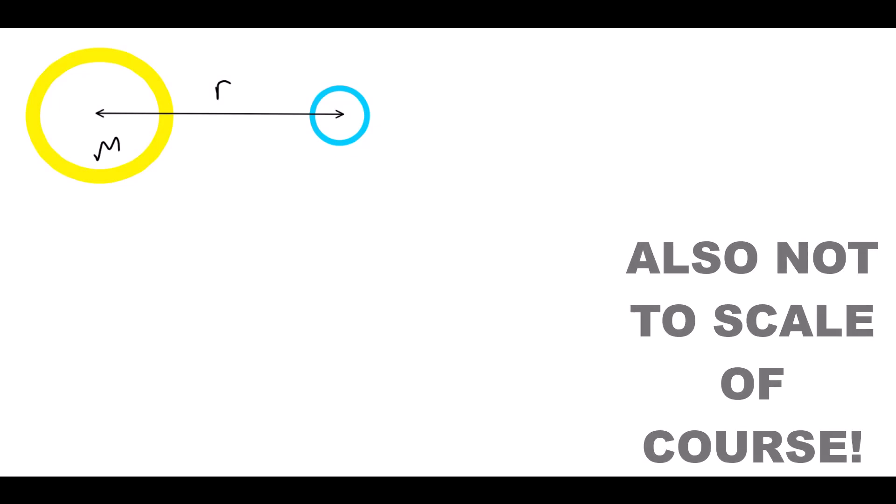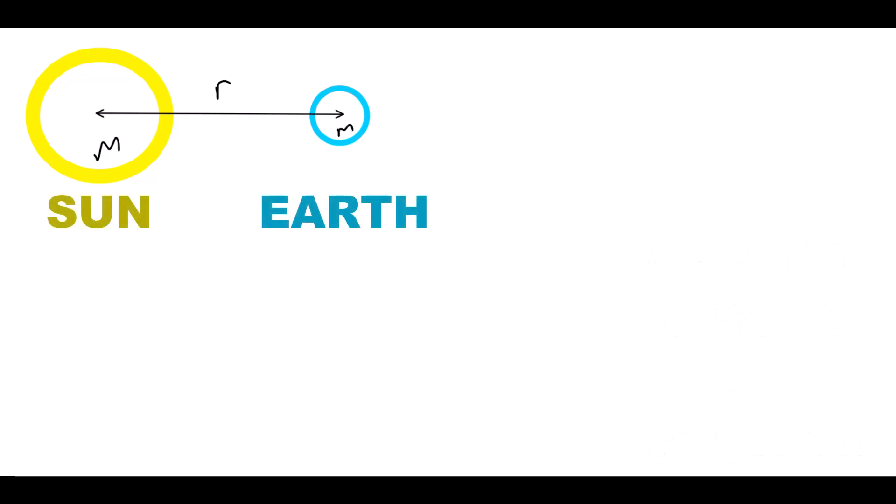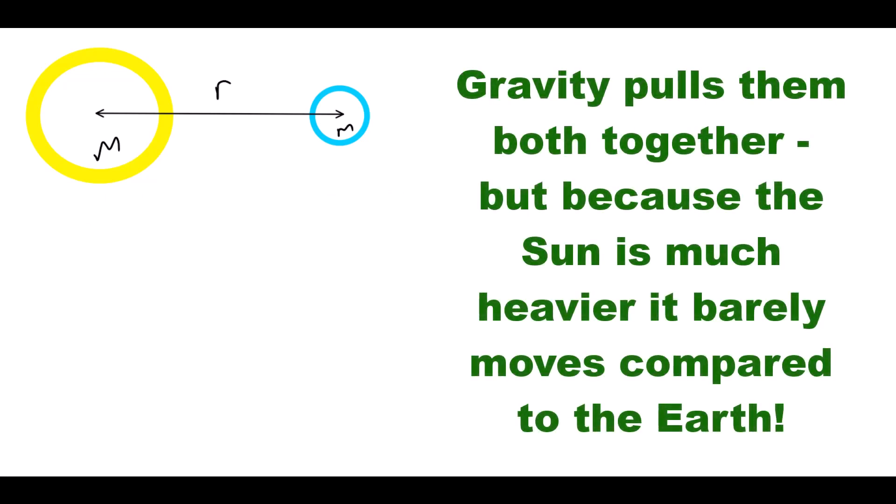Here I've drawn the sun and the Earth, not to scale of course, as well as a line connecting their centres. I'll label the sun's mass capital M, and the Earth's mass lowercase m, and their separation lowercase r. Gravity pulls the two together, and the forces it exerts can be quantified using Newton's law of gravitation. I'll write it here, but don't worry if maths and equations aren't your thing. I'll explain everything in good time.